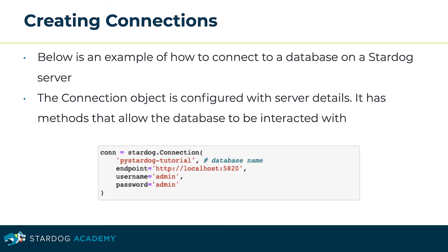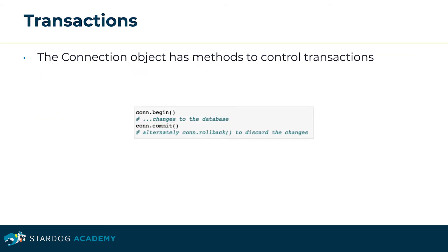We can also create connections. Below is an example of how to connect to a database on a Stardog server. The connection object is configured with server details and has methods that allow the database to be interacted with. In this example, I'm creating a connection to the PyStardog tutorial database, giving the endpoint of the server — localhost:5820 — and the username and password required to authenticate. We can also create transactions by calling a begin method to start a new transaction and then commit. If we need to discard changes, we can call the rollback method of the connection object.